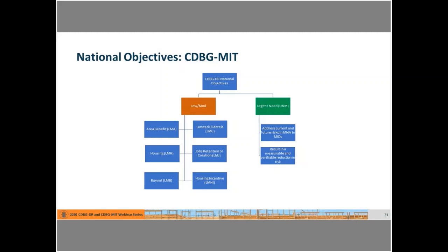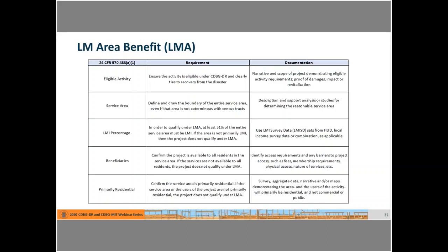I'm going to hand it off to Robbie Bezat to give more detail about the LMA national objective and the rest of the life cycle. As Lauren mentioned, the most commonly used national objective under an infrastructure project is the LMA national objective — low to moderate area benefit — as defined by 24 CFR 570.483(a)(1). Critical steps include looking at the eligible activity itself, the service area, and whether requirements are on file along with the project.